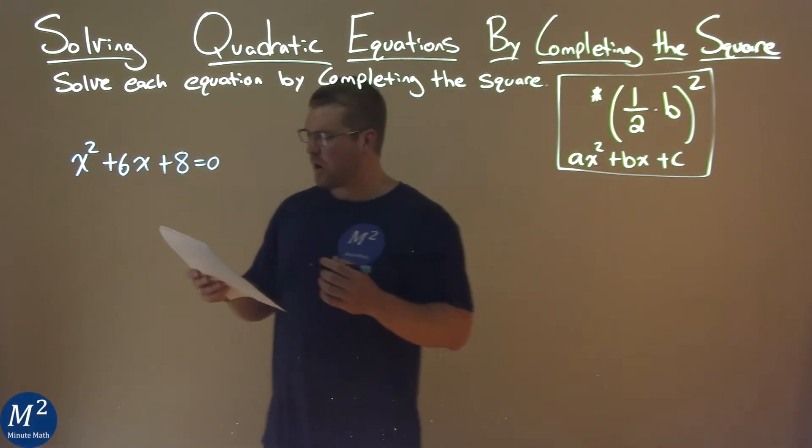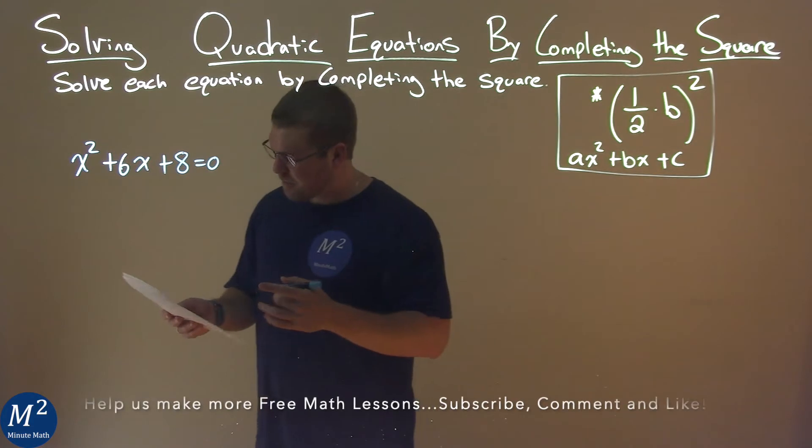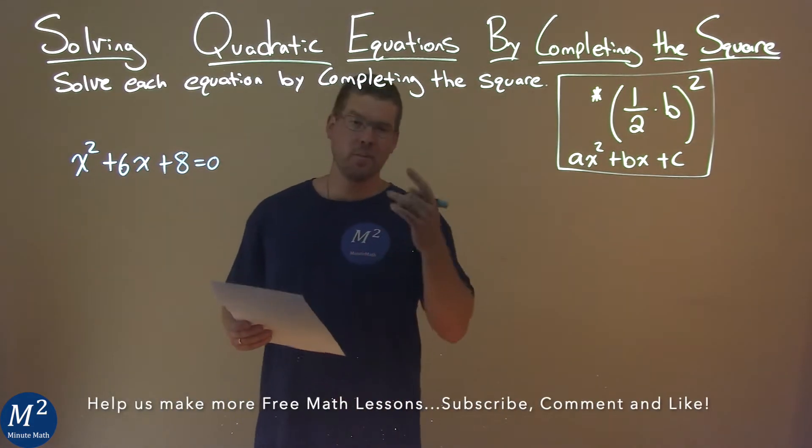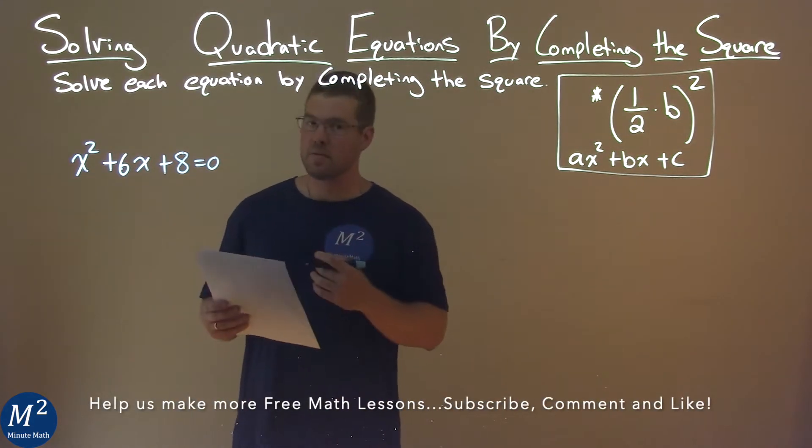We're given this problem right here. x squared plus 6x plus 8 equals 0, and we need to solve this by completing the square.